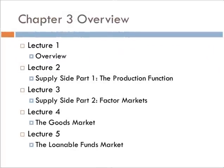So a brief overview. We have this lecture, which is an overview. Lecture 2 is going to look at the supply side, and we're particularly going to look at the production function. In Lecture 3, we're going to go through factor markets. Lecture 4, we're going to look at the goods side or the demand side of the economy — the goods market. And then finally in Lecture 5, we'll talk about the loanable funds market and bring everything together.